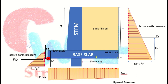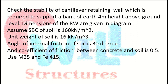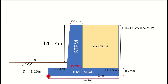Let's take one example: Check the stability of a cantilever retaining wall required to support a bank of earth 4 meters height above ground level. The dimensions of the retaining wall are given in the diagram. Assume soil bearing capacity is 160 kN/m², unit weight of soil is 16 kN/m³, angle of internal friction of soil is 30 degrees, coefficient of friction between concrete and soil is 0.5. Use M25 and Fe 415.